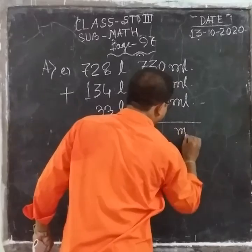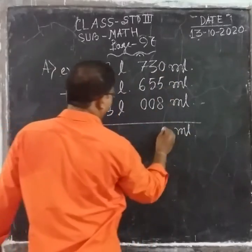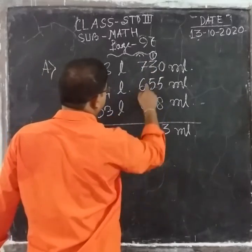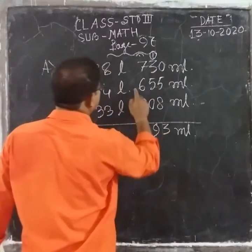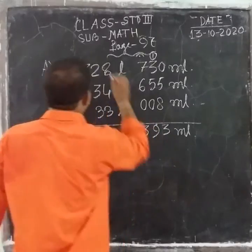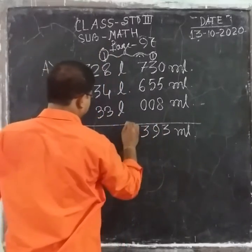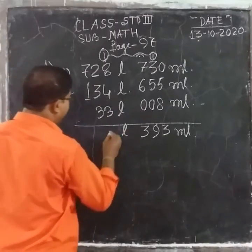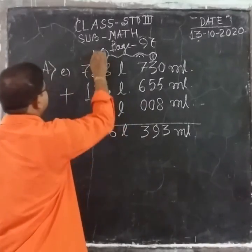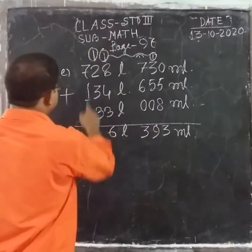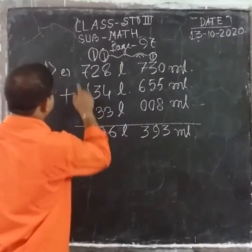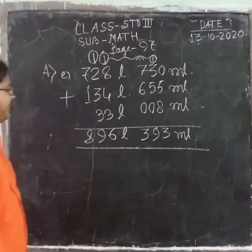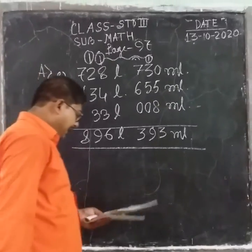First write the unit here. 5 plus 8 is 13 — write 3, carry 1. 3 plus 1 is 4. 4 plus 5 equals 9. 6 plus 7 is 13 — write 3, carry 1. 8 plus 1 is 9. 9 plus 6 is 15 — 12 plus 4 is 16 — write 6, carry 1. 2 plus 1 is 3, 3 plus 3 is 6, 6 plus 3 is 9. 7 plus 1 is 8. That means the answer is 896 liters 393 milliliters.